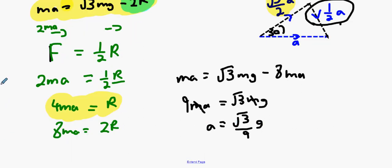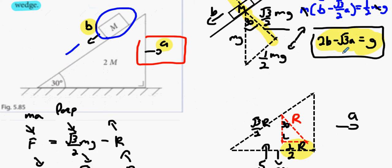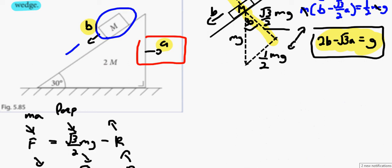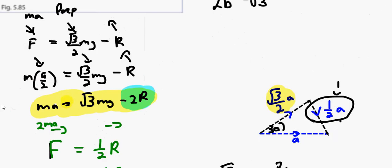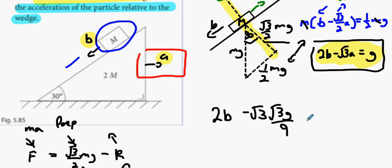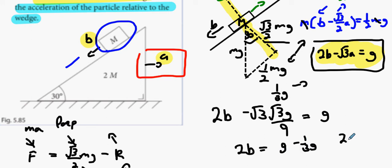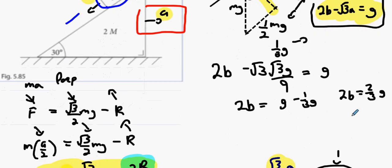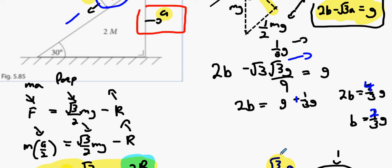Next we move on to find B. Going back to Equation 1: 2B − √3·A = g, and A = (√3/9)g. So 2B = g + √3·(√3/9)g = g + (3/9)g = g + (1/3)g = (4/3)g. Therefore B = (2/3)g. So the answer is B = (2/3)g.